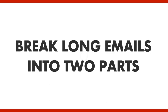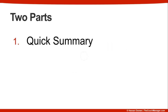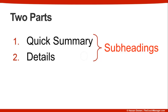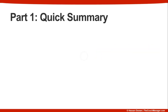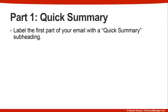We break longer emails into two parts. The first is a quick summary part and the second is a details part. Both of those parts should be listed as subheadings in the body of your email message. Here's what goes into part one, the quick summary.